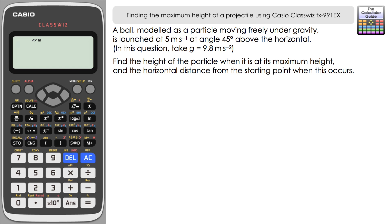Let's take a look at a sketch of the situation. We have a ball which is launched at 45 degrees with velocity 5 metres per second. What we're looking for is the highest point that the ball reaches and the horizontal distance from the starting point at which this occurs. From the diagram you can see that the journey of the ball is modelled as a parabola, and we can use that to help us find the maximum point.